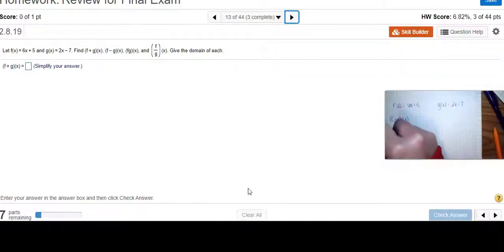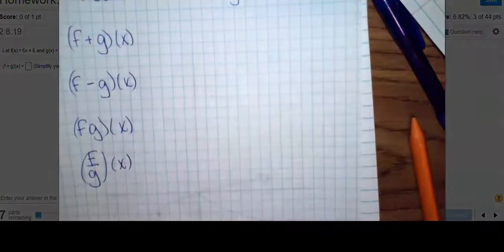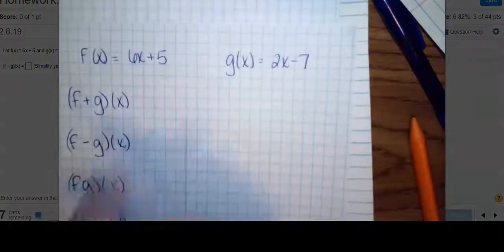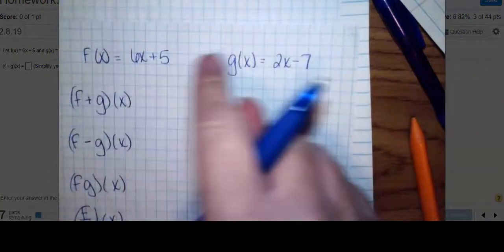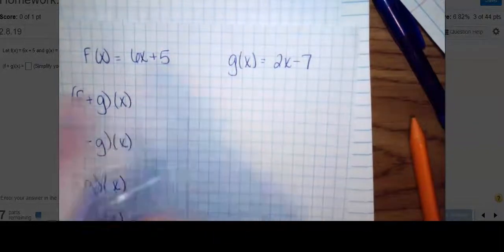I want to add these, subtract these, multiply these, and divide these. Once I'm done with that, I'm going to find the domain of each one. I've just recopied everything. f(x) = 6x+5, g(x) = 2x-7. I'm asked to find (f+g)(x).